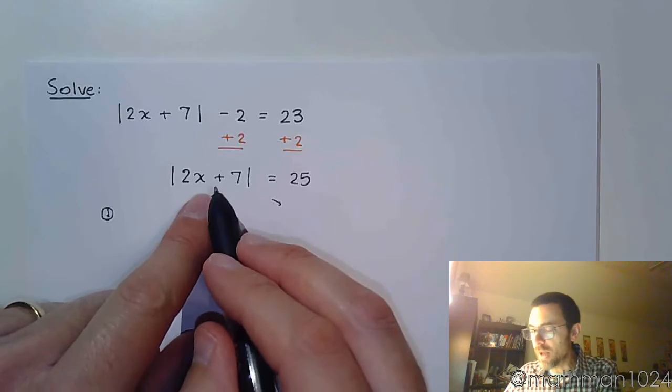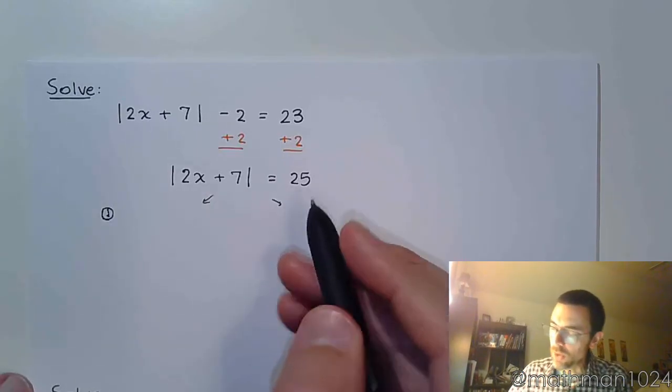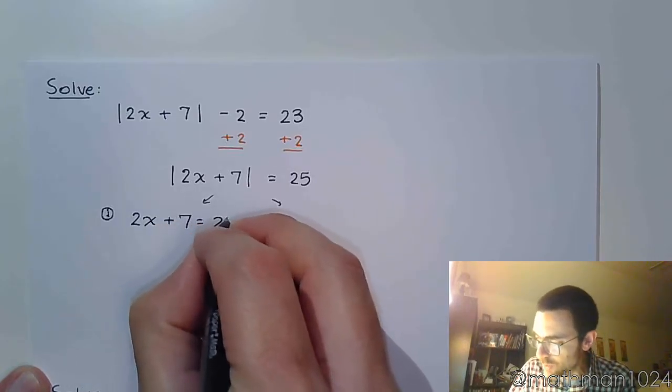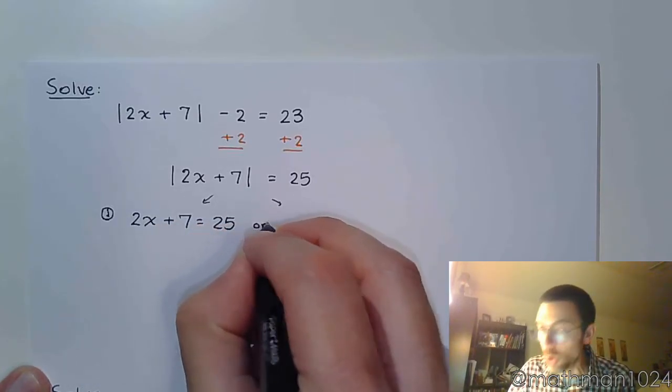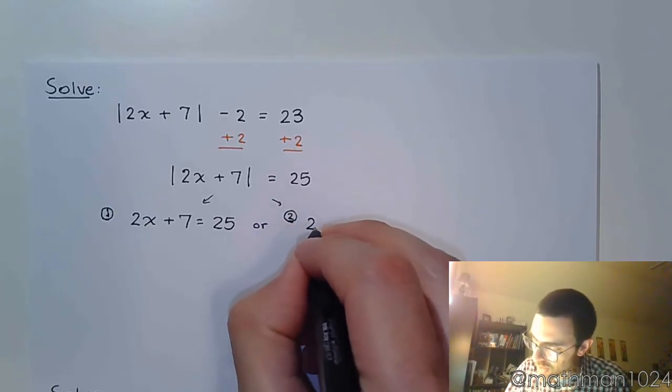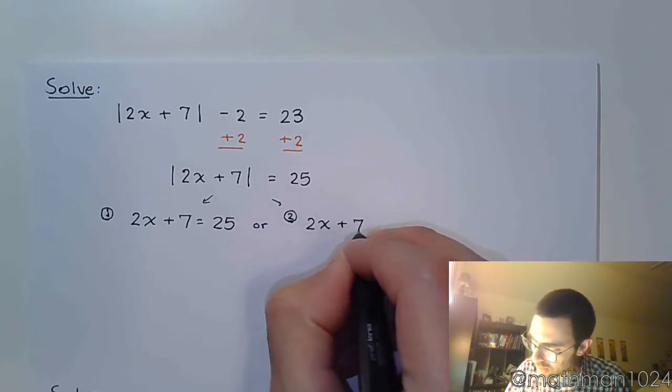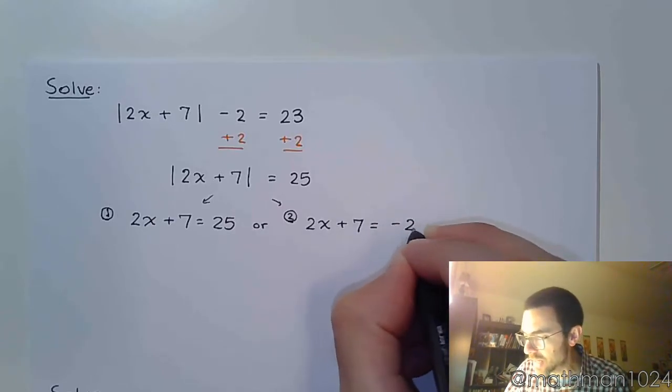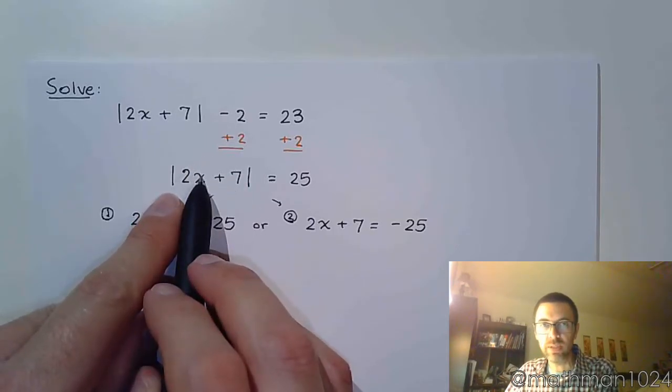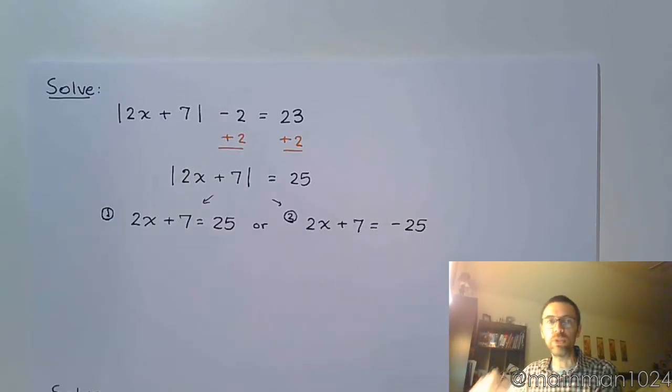So for an absolute value to equal 25, that's only going to happen when the expression inside is equal to 25. Or what else could happen? Well, if the expression inside is equal to negative 25, right? If 2x plus 7 equals negative 25, you put the absolute value on it, it's going to give you positive 25. So those are the two possibilities that we have here for this absolute value equation.